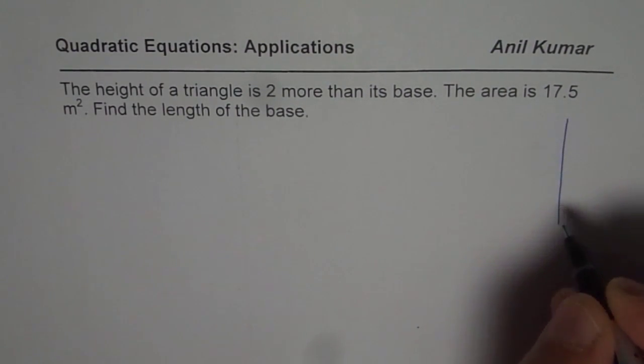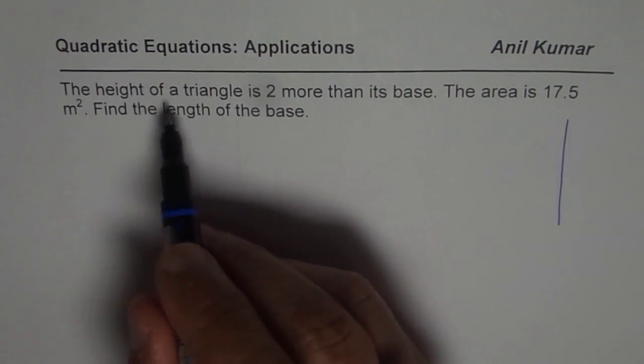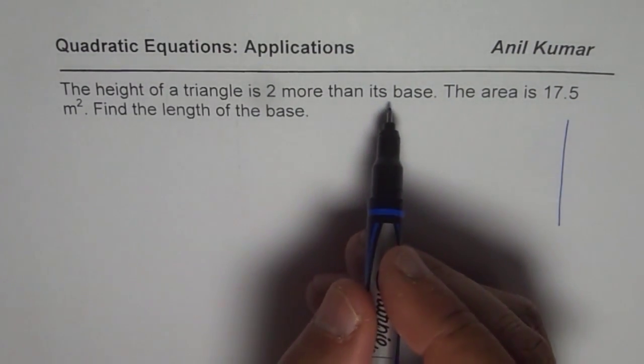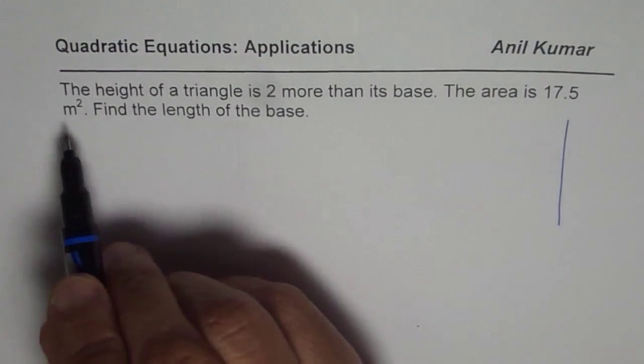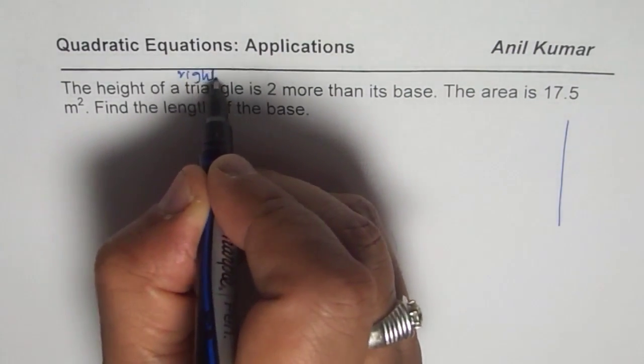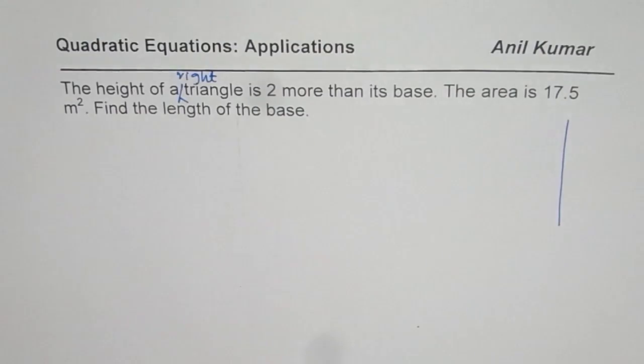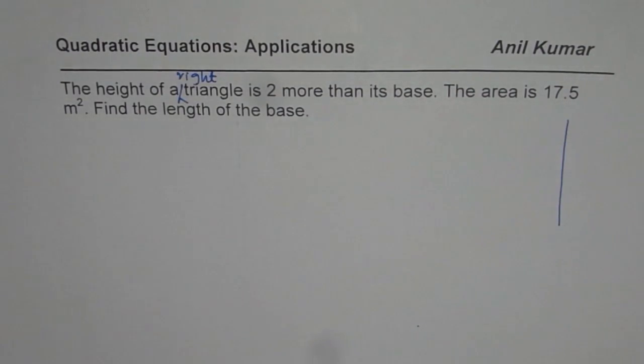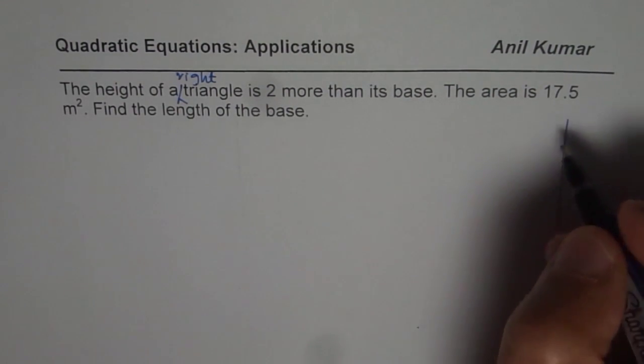So we are given a right triangle. The height of a right triangle—the term is missing here, let me add—height of a right triangle is two more than its base. Area is 17.5 meter square. Find the length and base.